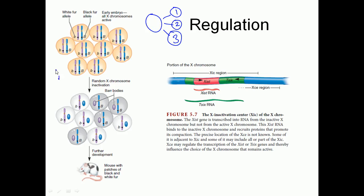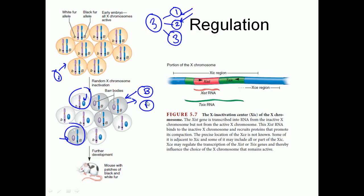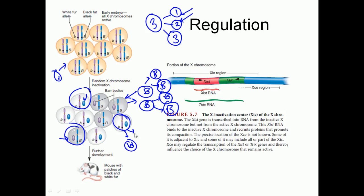Random inactivation occurs first. In some cells, the blue chromosome gets condensed and purple is okay; in other cells, purple gets condensed and blue is okay. These are the two varieties possible due to random inactivation. Second is maintenance: once a cell has capital B active and small b inactivated, when that cell divides, all the produced cells will have the same pattern. Similarly, cells from the other lineage will always have small b active. That is why you see dark and light patches.